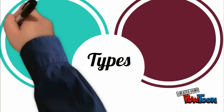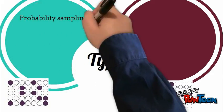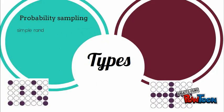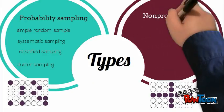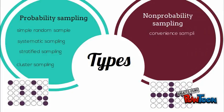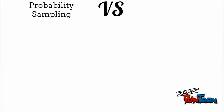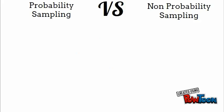These are the types of probability sampling and also non-probability sampling. This slide shows the differences between probability sampling and non-probability sampling.